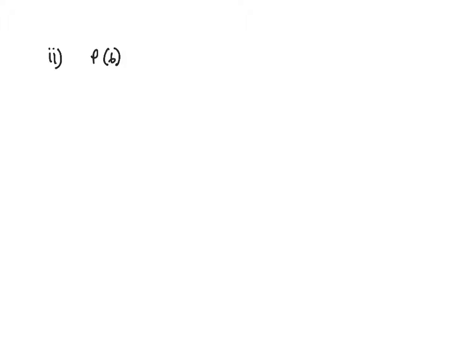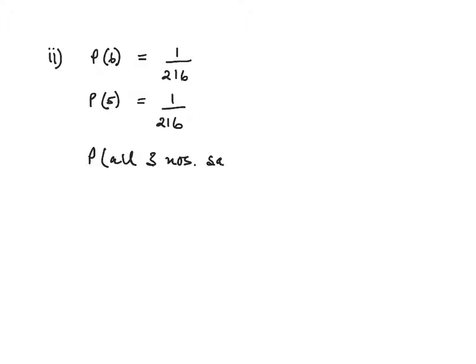Second question: the probability of all three dice giving the same number. We've just seen the probability of all three dice giving a six is one out of 216. The probability of all three dice giving a five will be the same — one out of 216. The probability of all three numbers being the same is simply six lots of one over 216, which is one over 36.